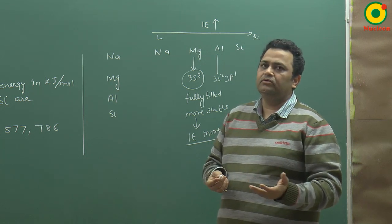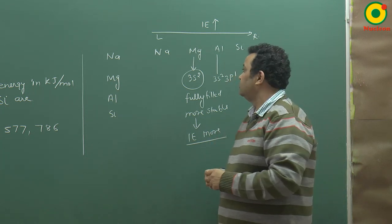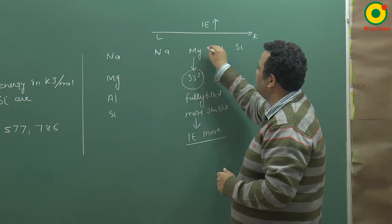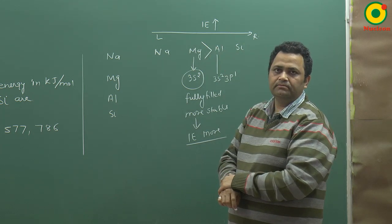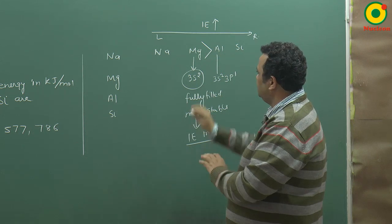Because if it is more stable, then you need more energy to take electron or give. So if I compare magnesium and aluminium, then magnesium is more than aluminium. Now, I flip these two.